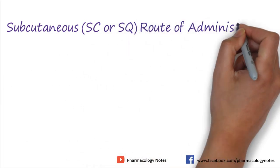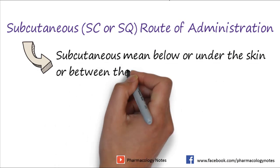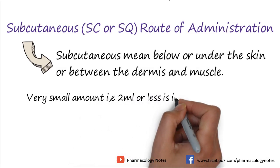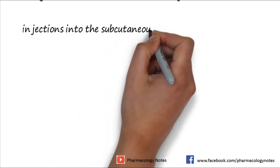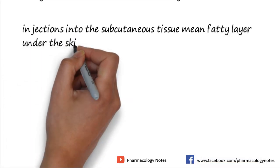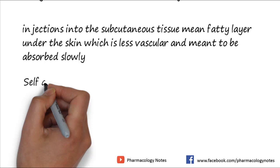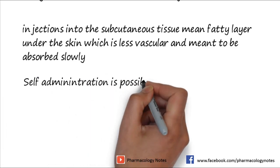The subcutaneous route, also known as SC or SQ, involves administration below the skin — between the dermis and the muscle. A very small amount, 2 ml or less, is injected via this route. Subcutaneous tissue is a fatty layer under the skin that is less vascular and results in slow absorption. A key advantage is that self-medication is possible, as seen with insulin, which patients inject themselves directly into the thighs or abdomen.